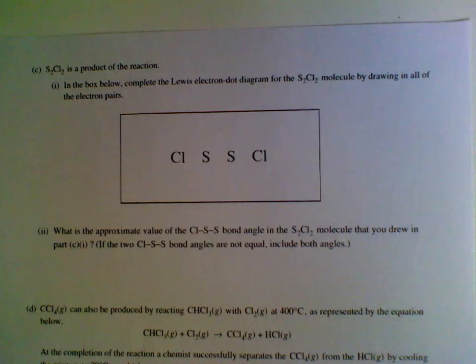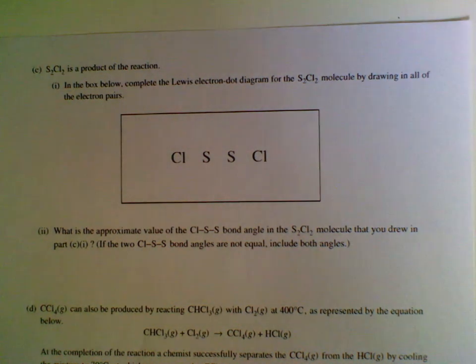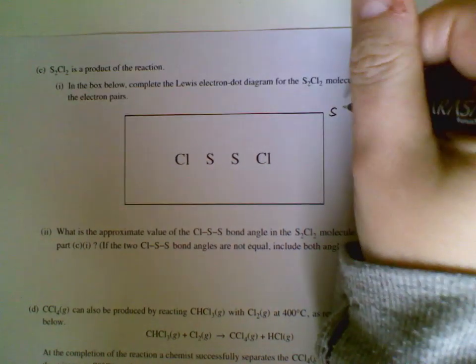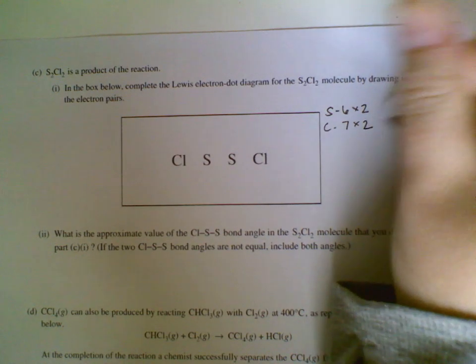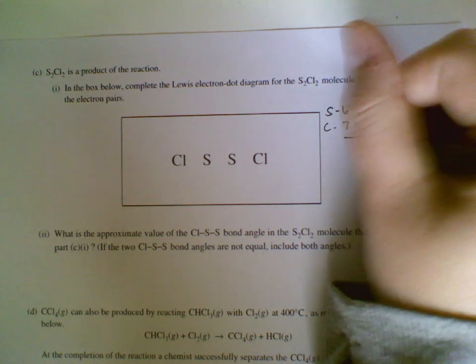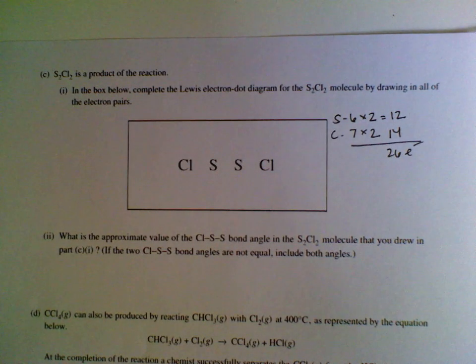Moving on to C. S2Cl2 is a product of the reaction. In the box below, complete the Lewis electron dot diagram for S2Cl2 by drawing all of the electron pairs in. Lines are okay in this particular problem. So if you want to do that, that's okay. Remember, with all your Lewis structures, I know you just want to add lines and dots and make everything single bonds. You need to go through and check your valence electrons. So I have in my sulfur six valence electrons, and there are two sulfurs. Chlorine, each of them has seven, and there are two of those as well. So I have 12 and 14 electrons, which means my picture needs to have a total of 26 electrons. No more, no less. Sulfur and chlorine could potentially have expanded octets. So you do not want to just assume everything is single bonds. Sometimes it works out, and sometimes it doesn't.